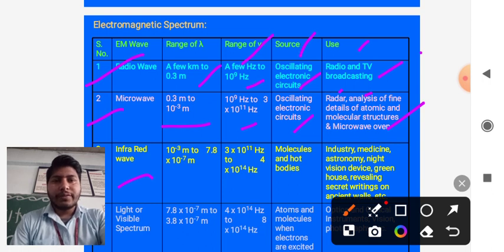The range of wavelength of infrared rays is 10 to the power -3 meter to 7.8 times 10 to the power -7 meter, and the range of frequency is 3 times 10 to the power 11 hertz to 4 times 10 to the power 14 hertz.